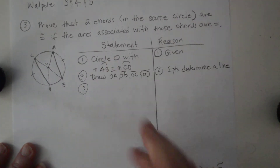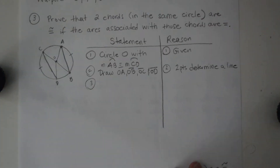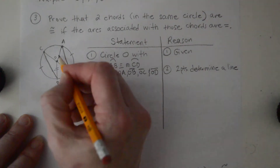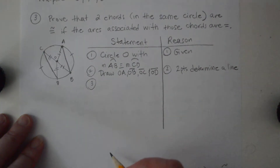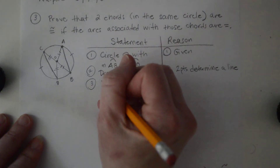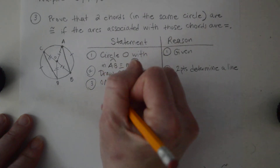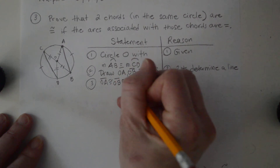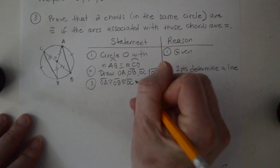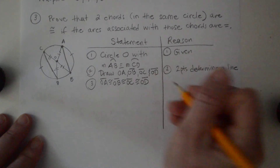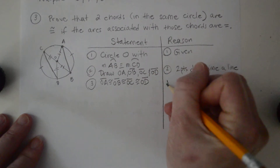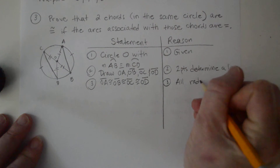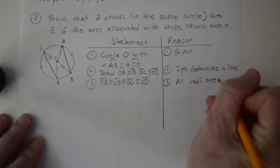Hopefully at this point you've seen enough of these proofs to say our next step is that OA, OB, OC, and OD are all congruent to each other, and the reason is all radii are congruent.